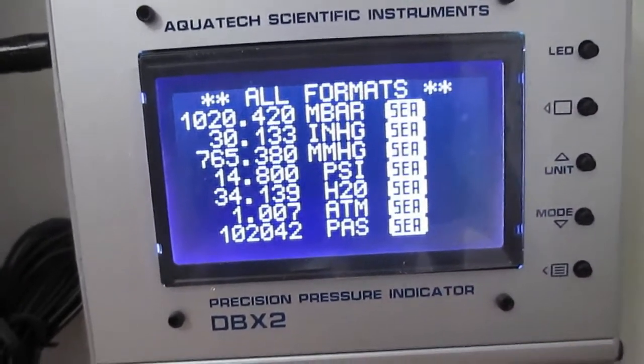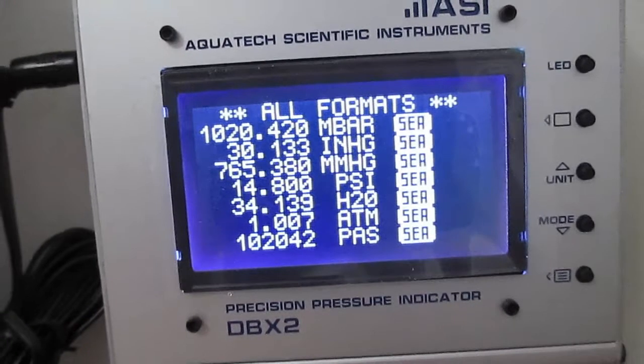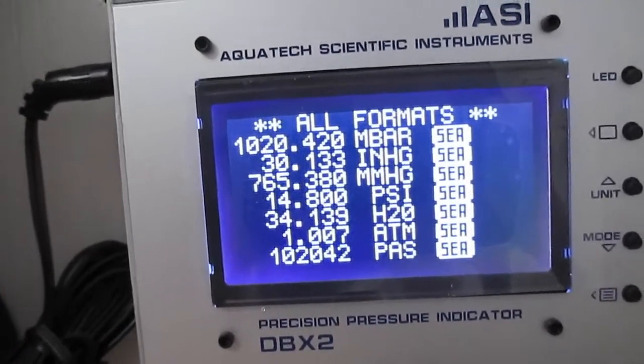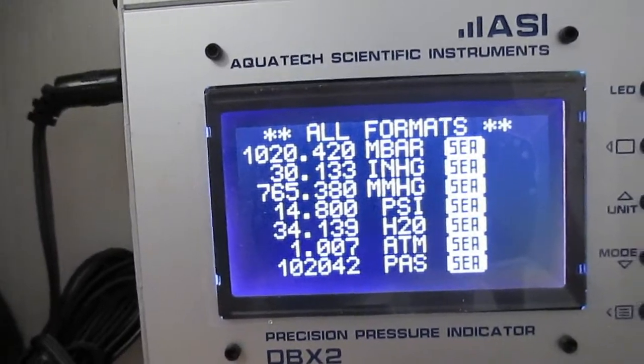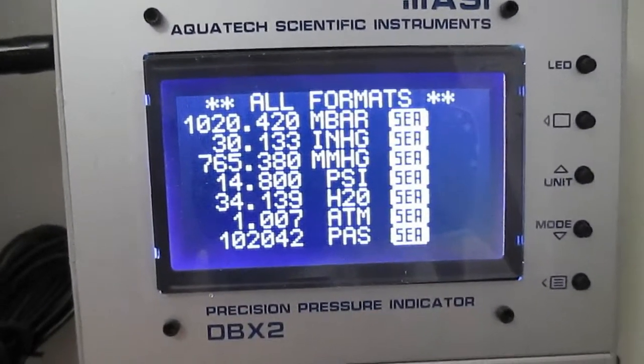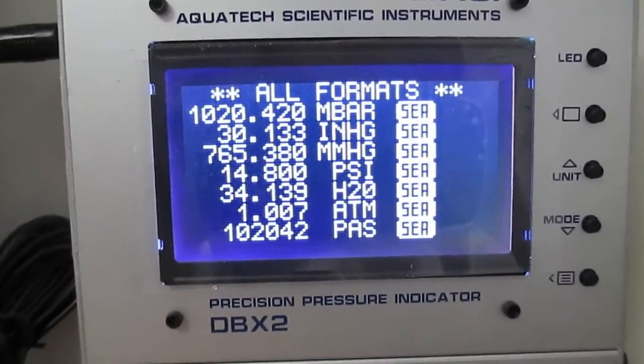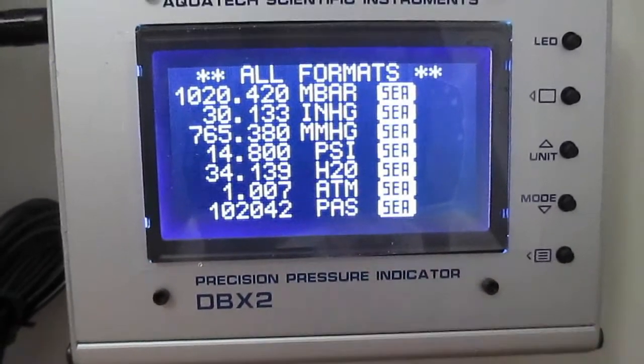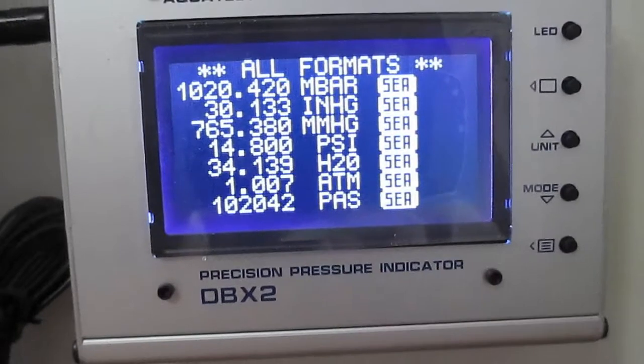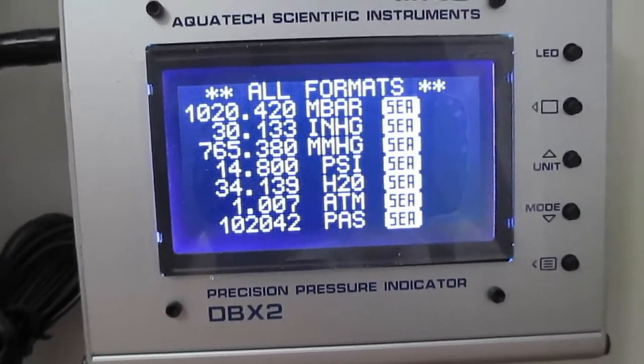The next one shows you all the different formats that are available, and there are eight or seven of those. The pressure is 1020.42 millibars, 30.133 inches of mercury, different ones PSI, Pascals I believe, that is 102,042.